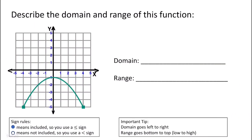Now let's describe the domain and range of this function. Going left to right for the domain: here is my leftmost boundary and here is my rightmost boundary. I have a filled-in circle at negative 4 and another filled-in circle at 4. So my domain is going to be negative 4 less than or equal to x less than or equal to 4. Now for the range, going bottom to top: here is the bottom of this function, and then the top of this function is right here.